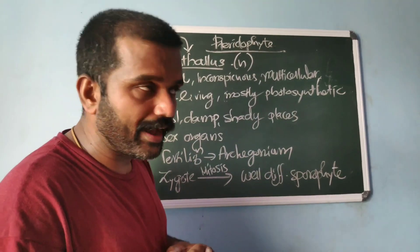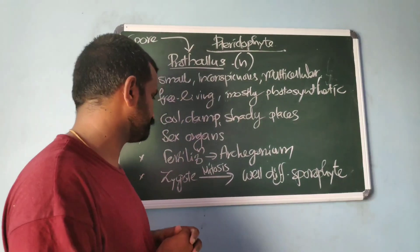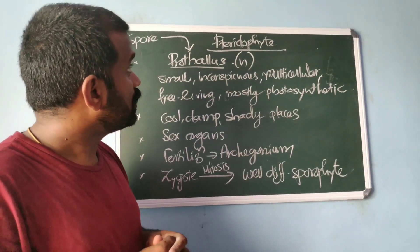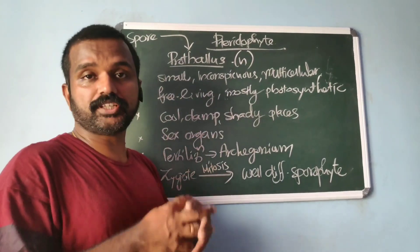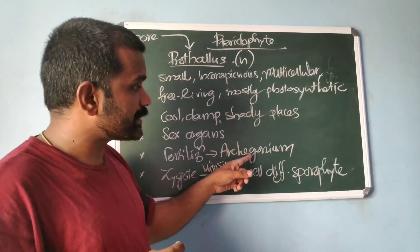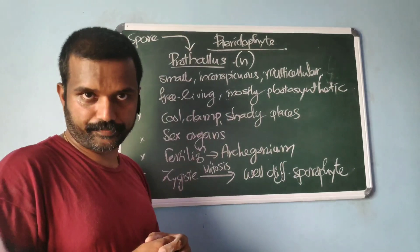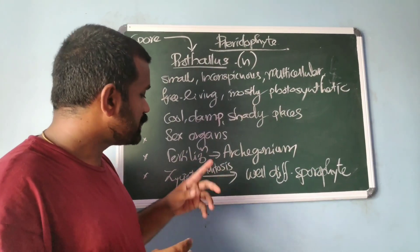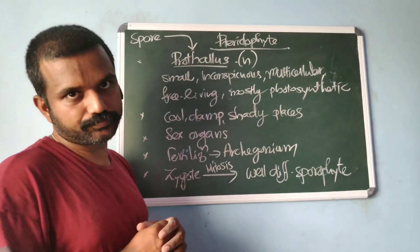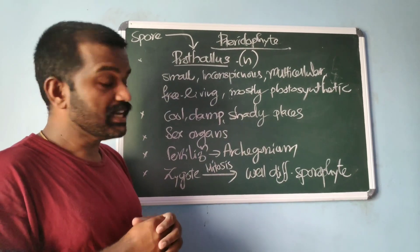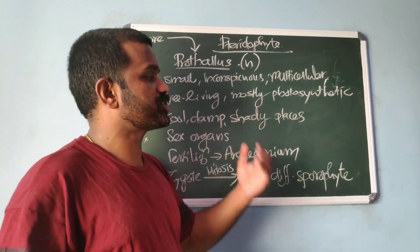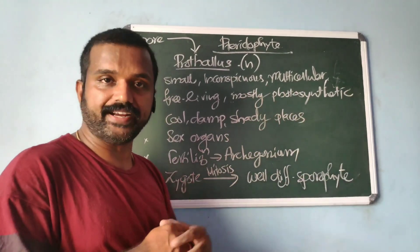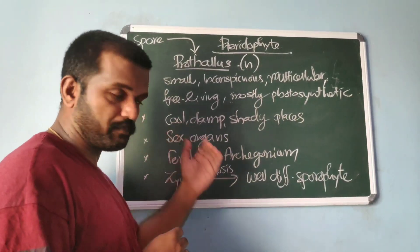The male sex organ is antheridium and the female sex organ is archegonia. Fertilization takes place inside the archegonia. After fertilization, the zygote undergoes mitosis to develop into a well-differentiated sporophyte.